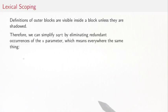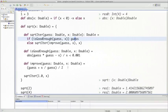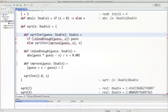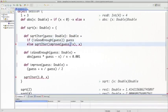So we've seen that definitions of outer scopes are visible inside a block unless they're shadowed. We can use that to simplify square root by eliminating redundant occurrences of the x parameter, which means everywhere the same thing. So what you see here in the worksheet is that the x parameter that comes into square root is duplicated here, here, and here. But it's never changed. It's always passed as it is before. So we can simply eliminate it, all these occurrences here.